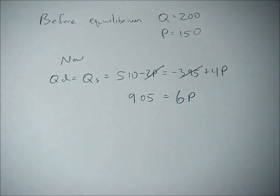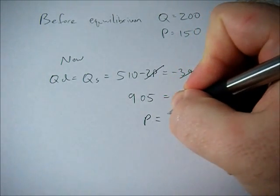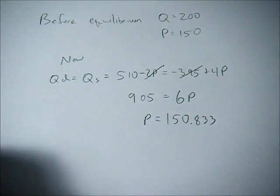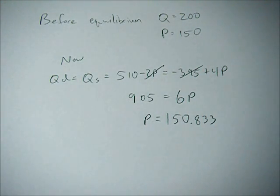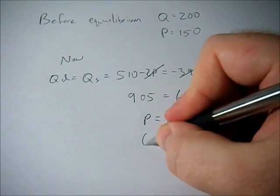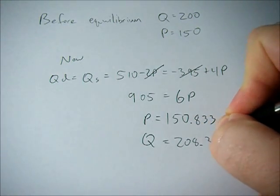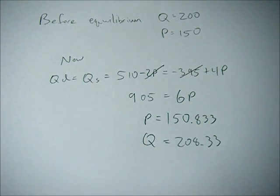Now we have to divide both sides by 6, and that ends up giving us an equilibrium price of 150.833. We can plug this into either of these functions and we end up getting a new equilibrium quantity of 208.33.